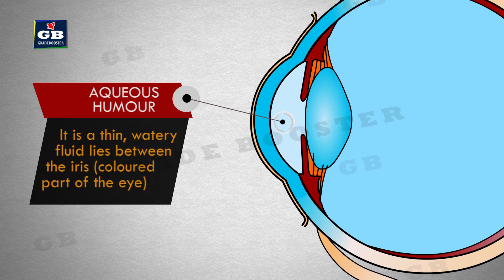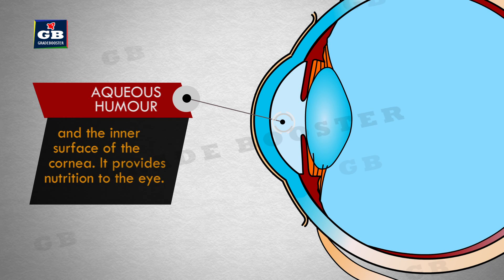This is aqueous humor. It is a thin watery fluid that lies between the iris and the inner surface of the cornea. It provides nutrition to the eye.